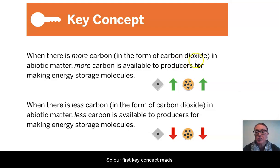So our first key concept reads, when there is more carbon in the form of carbon dioxide in the abiotic matter, more carbon is available to producers for making energy storage molecules. And when there is less carbon in the form of carbon dioxide in abiotic matter, then there is less carbon available to producers for making energy storage molecules.